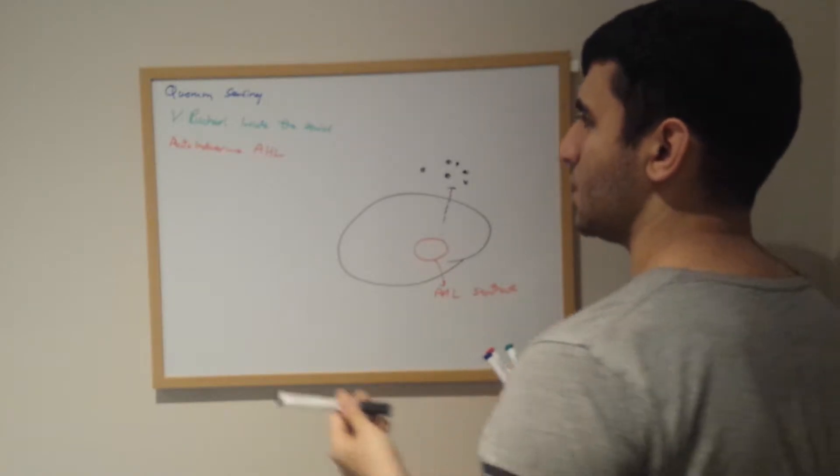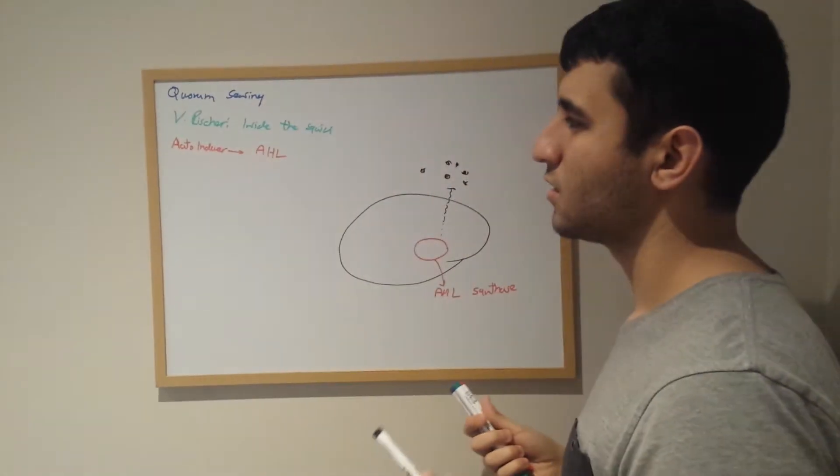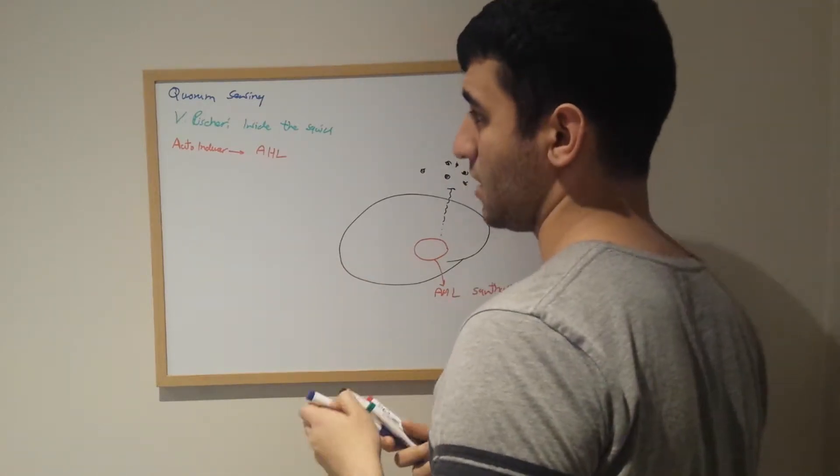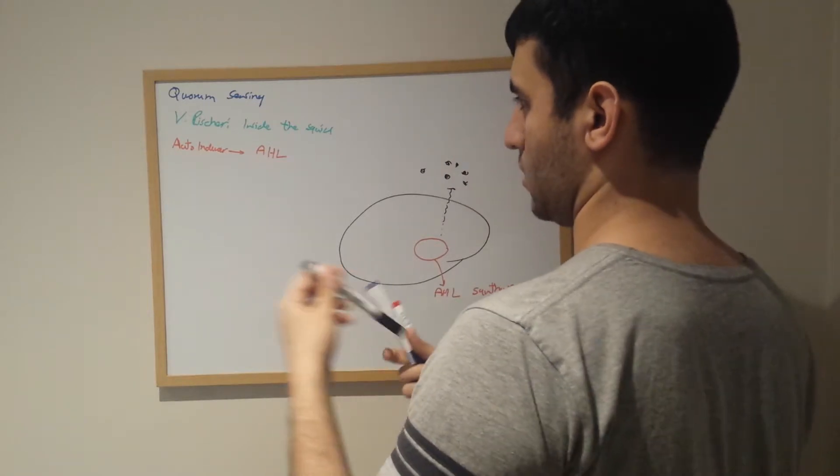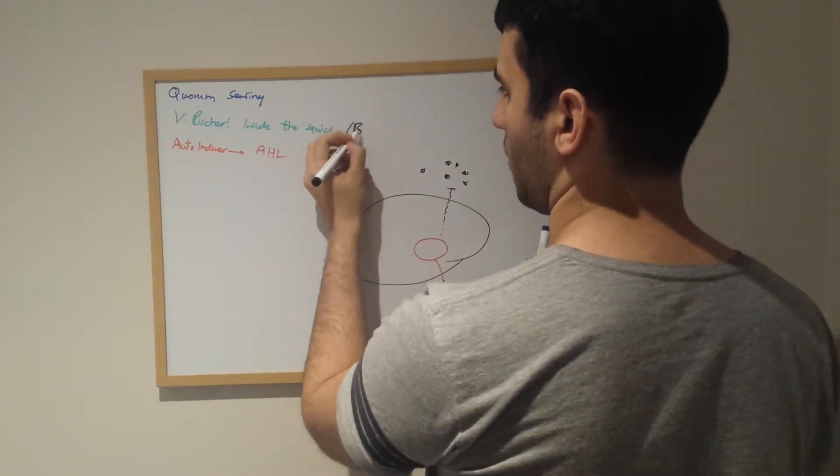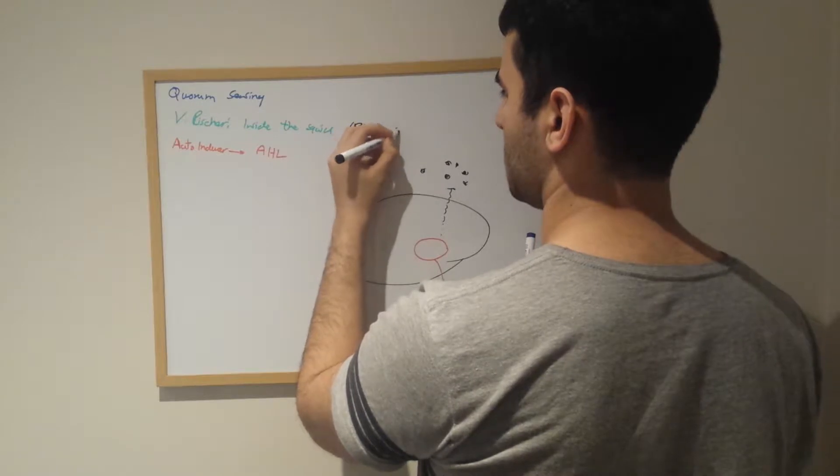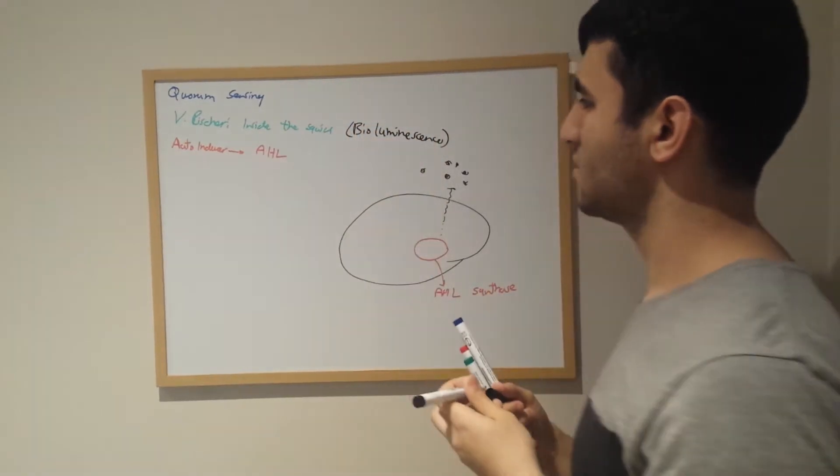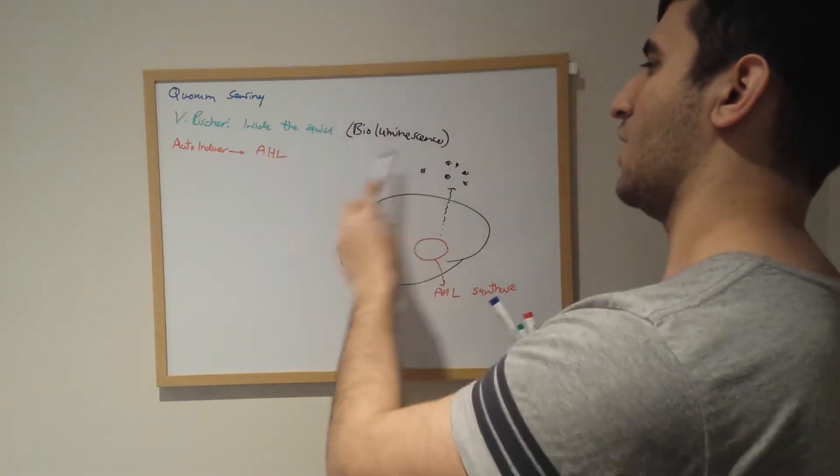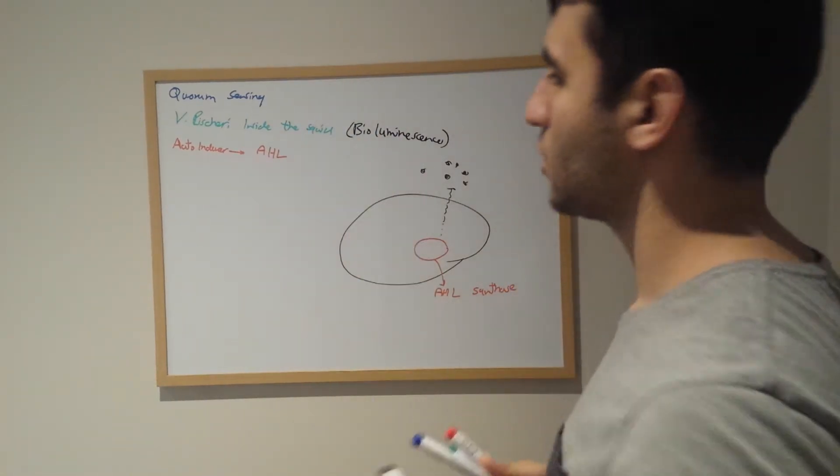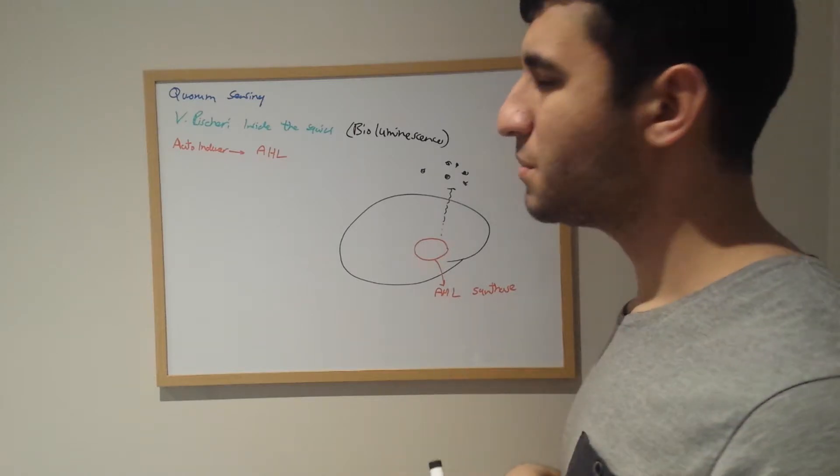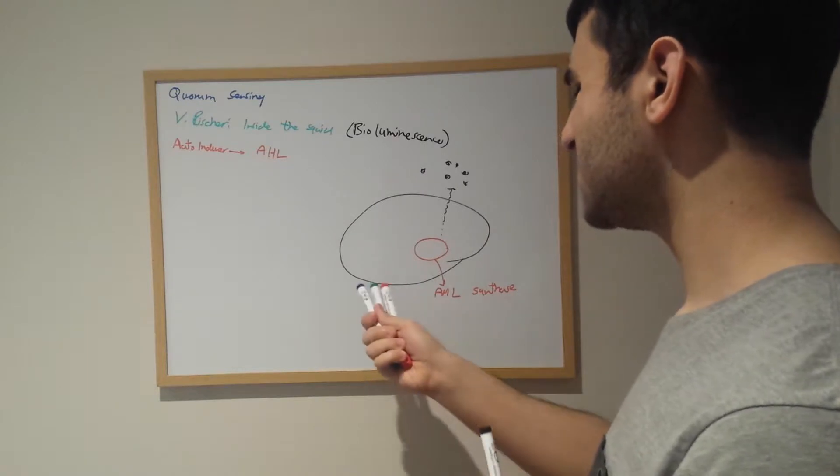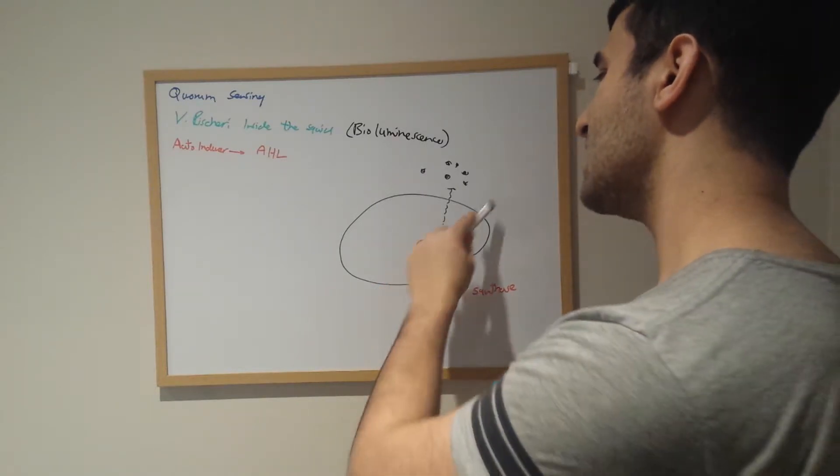With this squid, it would only glow - the bioluminescence - bioluminescence would only be activated and glow in the squid once the population of the cell is large, because AHL is cell density dependent.